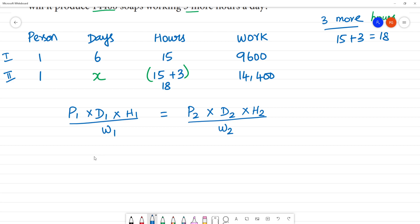P1 is person, 1 multiplied by days is 6 days, multiplied by hours is 15 hours, by W1 is 9600. P2 is 1. D2 is X days. Multiplied by hours is 18 hours because 3 more hours. By W2 is 14,400.